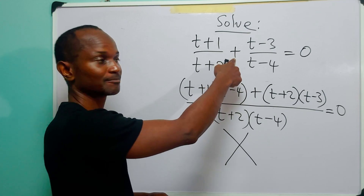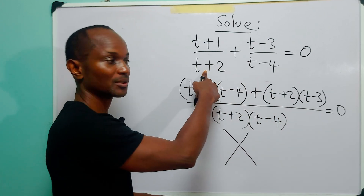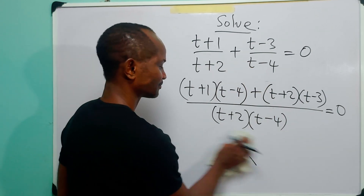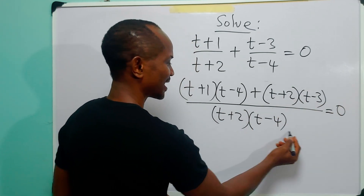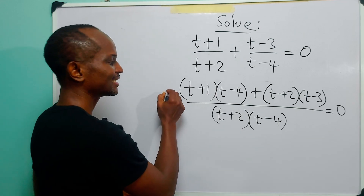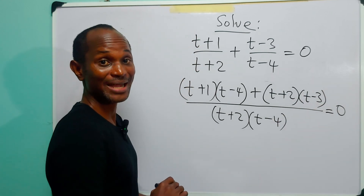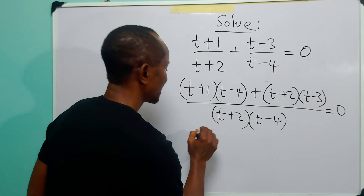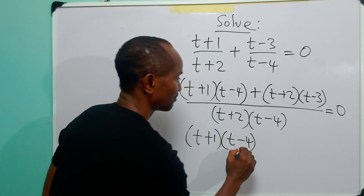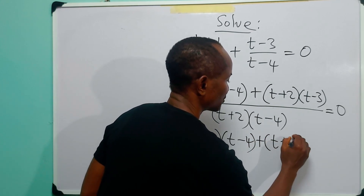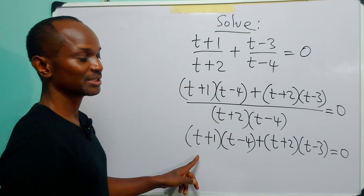We write down the sign, multiply this quantity by this quantity, draw the line, then multiply this quantity by this quantity. The next thing is to multiply both sides of the equation by the denominator. Multiplying this side will cancel it, and remember: multiplying anything by zero stays zero. So ultimately we have (t+1)(t-4) + (t+2)(t-3) = 0.